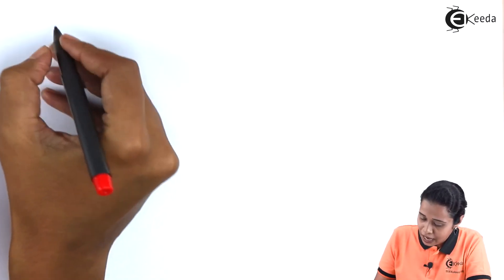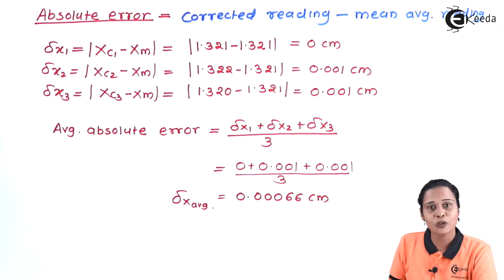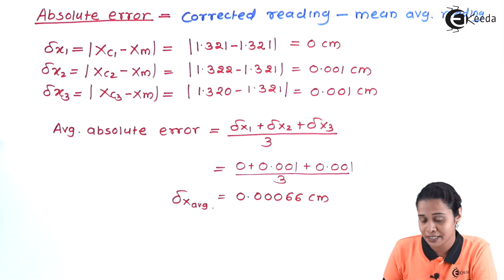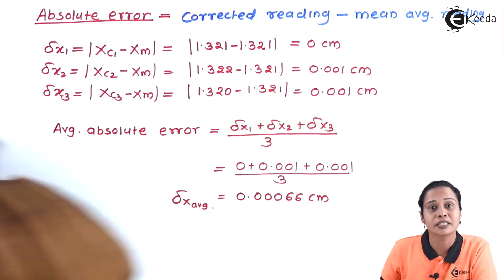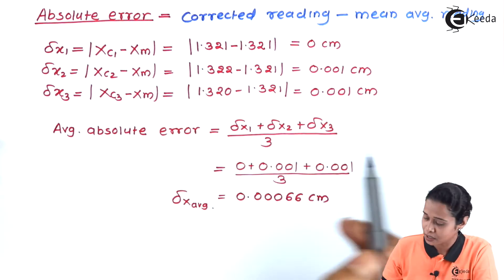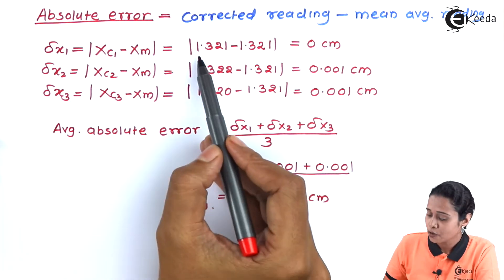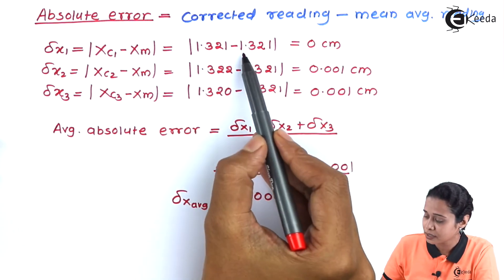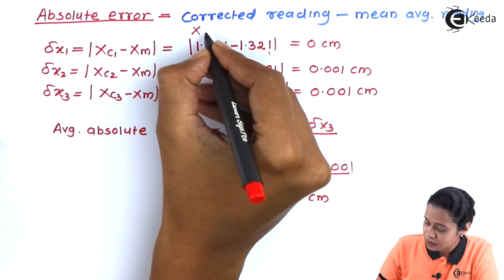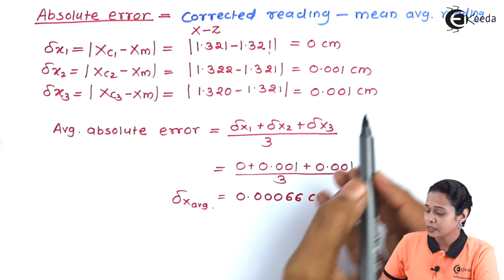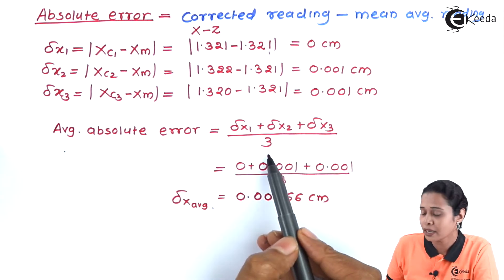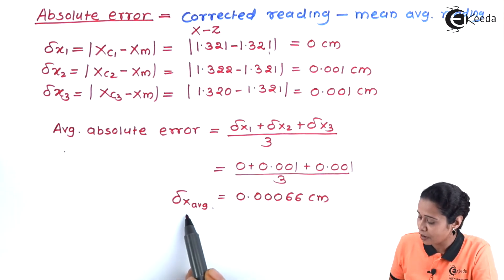After that we have to calculate the absolute error. Absolute error is the difference between each corrected reading and the mean average reading. The corrected reading is the given reading minus the zero error of the instrument. Putting in the values: 1.321 minus the mean average reading of 1.321. Finally, we take the average absolute error, which is the sum of absolute errors divided by the total number of readings.